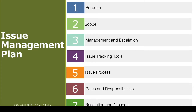There are seven main steps in issue management: the purpose, the scope, management and escalation, issue tracking tools, the issue process, roles and responsibilities, and resolution and closeout. These are the seven things you're going to put together when developing an issue management plan for your projects. Each of these pieces compiled together really gives you a solid issue management plan to go forward and manage issues on your projects.